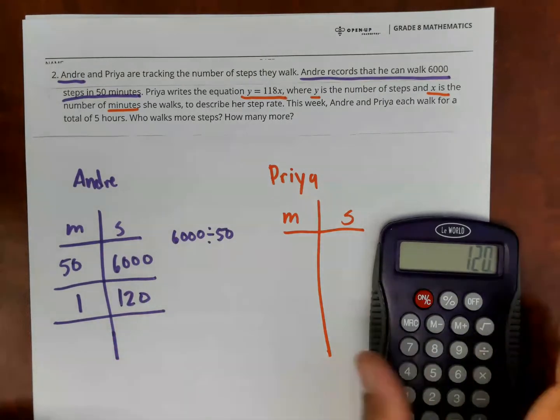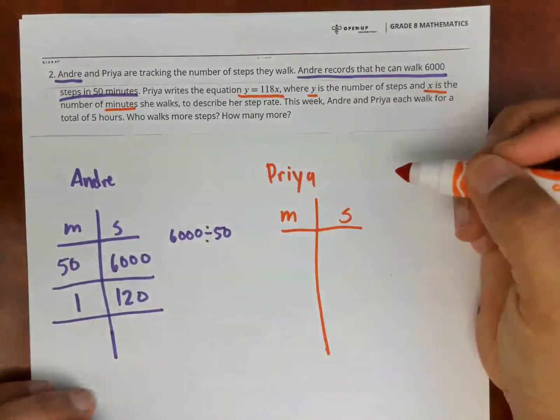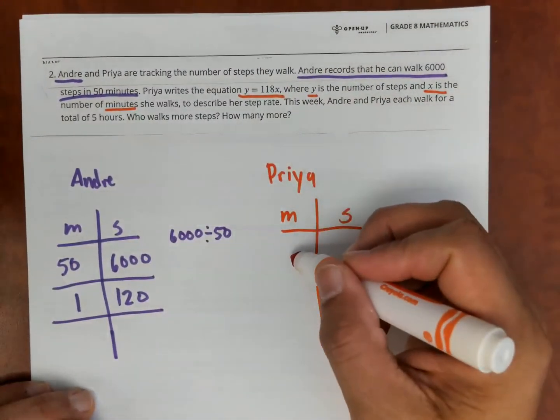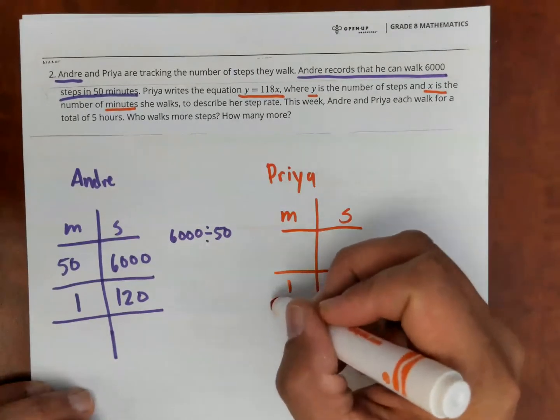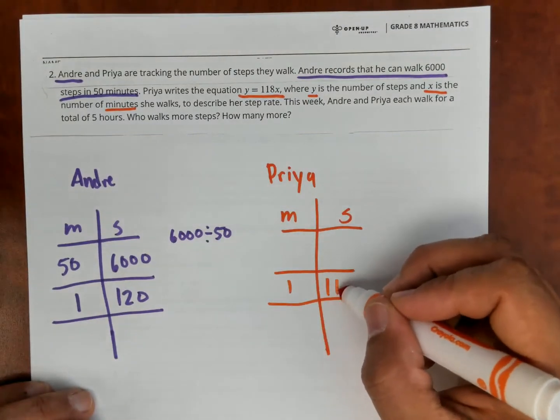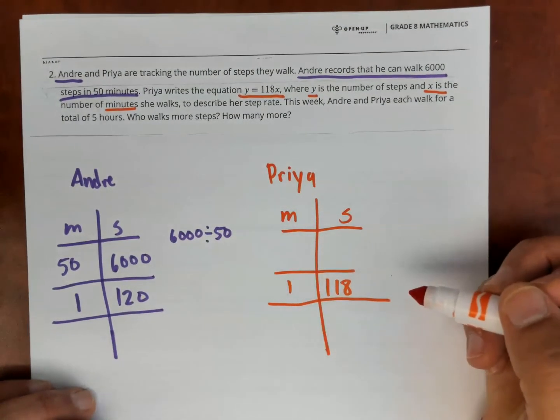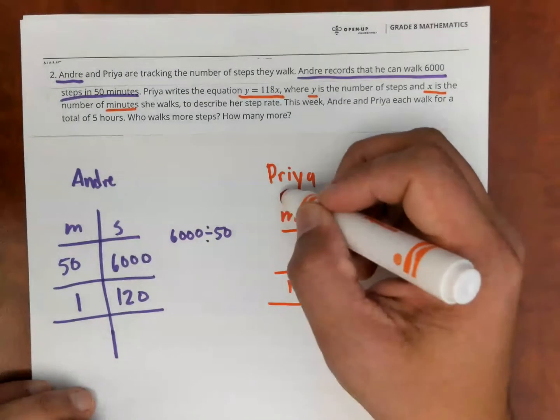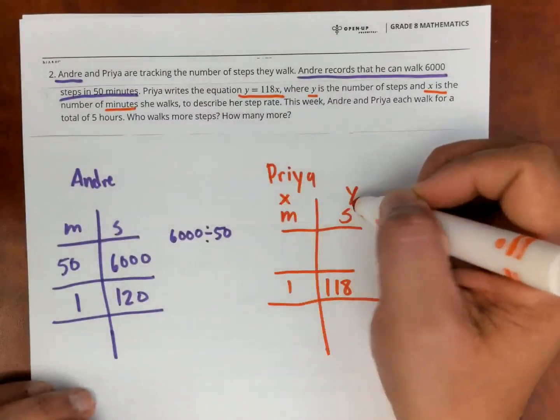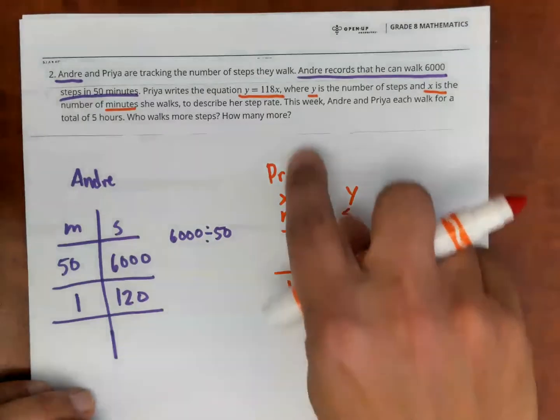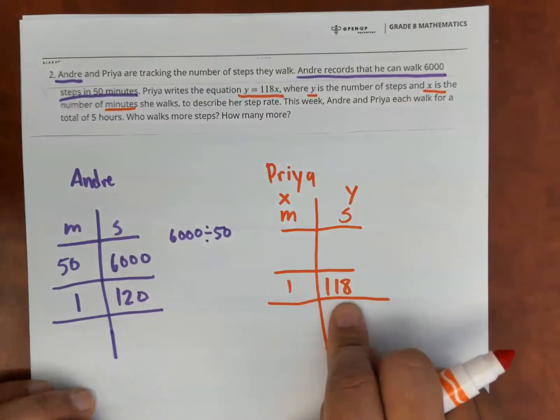With Priya's, what I know the equation here is Y equals 118X. So that tells me that for one minute, Priya goes 118. So one way to also label these is with X here and Y here. So X is one, I multiply that there.